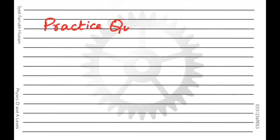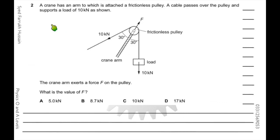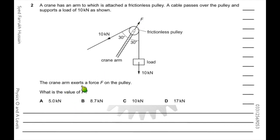In this video we will solve questions related to vectors from AS Physics. The first question: a crane has an arm attached to a frictionless pulley. A cable passes over the pulley and supports a load of 10 kilonewtons. There are two ropes, each having a 10 kilonewton force, and there is a crane arm on which force F is acting. You have to find out the value of F if the system is balanced — that is, in equilibrium.